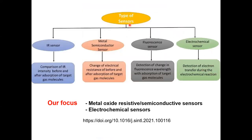In terms of the types of sensors, as I mentioned before, there are IR (infrared) type sensors that I'm not going to talk about. There are metal oxide semiconductor sensors that change electrical resistance, which I will talk about. Fluorescence type sensors are another very accurate option. Some of these infrared and fluorescence sensors cannot be used in situ, particularly in hostile environments like high temperatures or corrosive conditions. Metal oxide and electrochemical sensors can be used for in situ monitoring, so our focus will be on metal oxide resistive or semiconductive type sensors and electrochemical sensors.